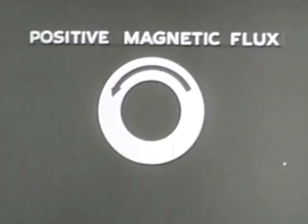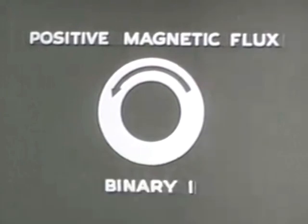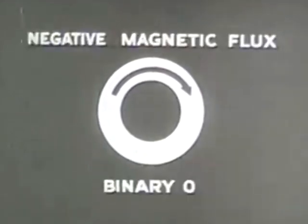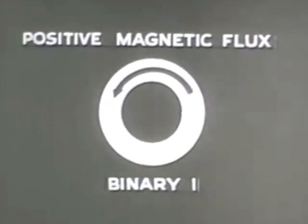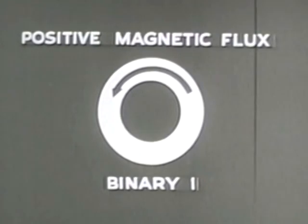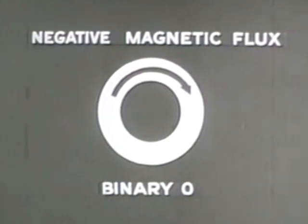Bistable, because it can be magnetized in two directions. When the magnetic lines of force point in one direction around the core, they are a positive magnetic flux, and the core is said to hold a binary one. If the direction of magnetism is reversed, the flux becomes negative, and the core holds a binary zero. Remember that this arbitrary definition may be reversed in some systems.